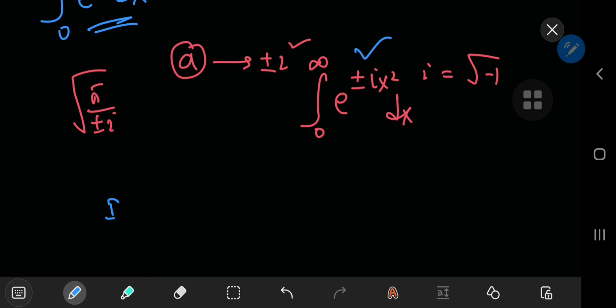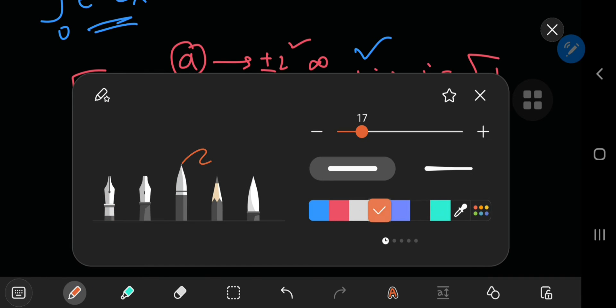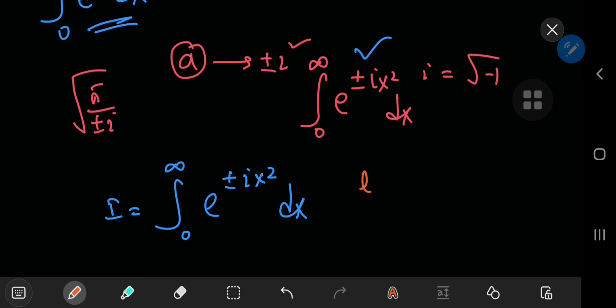We're interested in the integral from zero to infinity of e to the positive or negative ix squared. And immediately we can make use of a substitution to make our lives much easier. Let x squared equal to t,